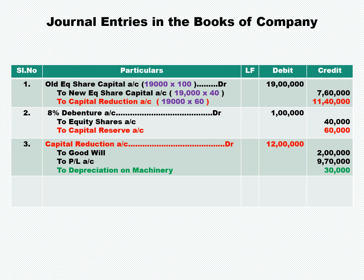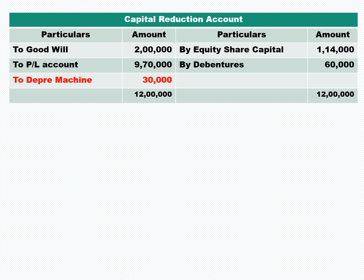Capital reduction account debit total is 12 lakh — that is, 11 lakh 40,000 plus 60,000. This is utilized as: to goodwill 2 lakh, to P&L account 9 lakh 70,000, and to depreciation on machinery the balance 30,000 — calculated as 12 lakh minus 2 lakh minus 9 lakh 70,000. The capital reduction account is simple: whatever liability is reduced (profit from reducing liabilities) comes on the credit side, and losses or expenses written off come on the debit side.